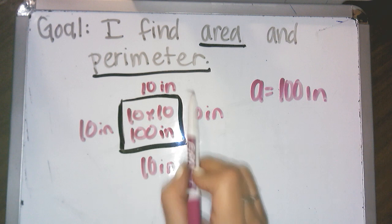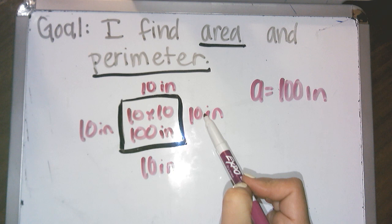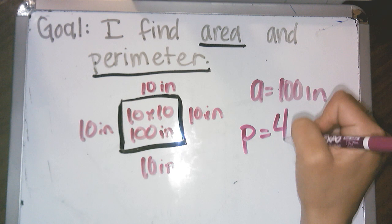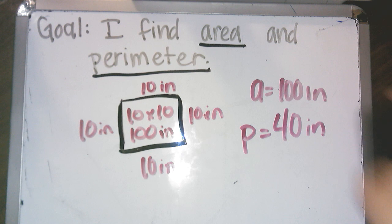Then perimeter. Now I need to figure out if Ms. Johnson walked all the way around this, how far would it be? So I would add this all up. So 10 plus 10 is 20 plus 10 is 30 plus 10 is 40. So my perimeter would be 40 inches. Okay. So that's for a square.